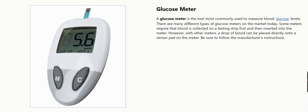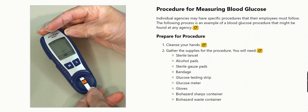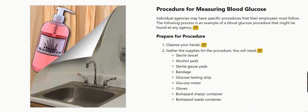Be sure to follow the manufacturer's instructions and procedure for measuring blood glucose. Individual agencies may have specific procedures that their employees must follow. The following process is an example of a blood glucose procedure that might be found at any agency. To prepare for the procedure, cleanse your hands.